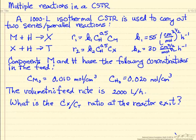We only feed components M and H to the reactor, and those concentrations are given here, as well as the volumetric feed rate that's coming into the reactor. The question is, at the effluent of the reactor, what is the concentration of X divided by the concentration of T?